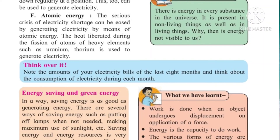Note the amounts of your electricity bills from the last 6 to 8 months and think about the consumption of electricity during each month. With the help of your parents, elder brother, or sister, discuss how much electricity is consumed, what the unit rate is, and what the light bill is for your house, society, or apartment.